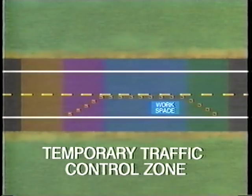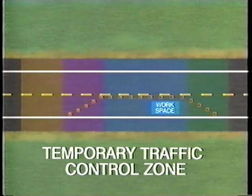Most temporary traffic control zones can be divided into four areas. In this part of the training, we'll look at each of the areas and examine them for one direction of travel. If the work you'll be doing affects more than one direction of travel, the same principles we cover here will apply to traffic in all directions. Accidents can occur in all of these areas if they are not properly controlled.